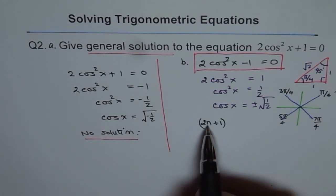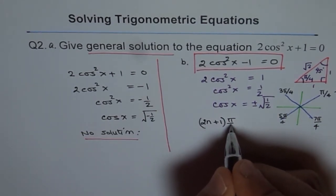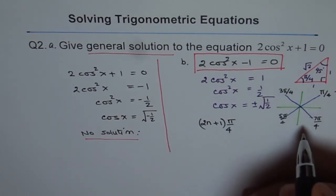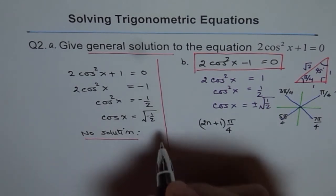2n plus 1 will give me always an odd number. If I put n as 0, then I get 1. If I put n as 1, I get 2 plus 1 as 3, so I get 3. And if I add pi by 4 to it, so I'll get this pi by 4s. So, that is the way I've made a kind of series for you to write a general solution.